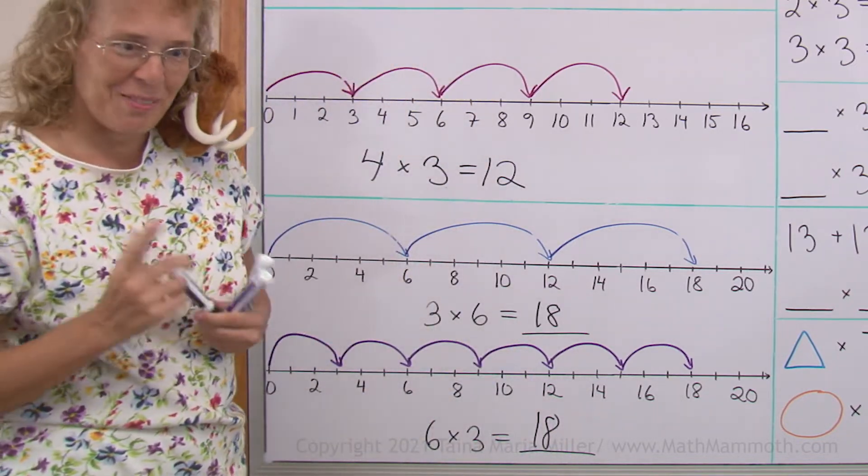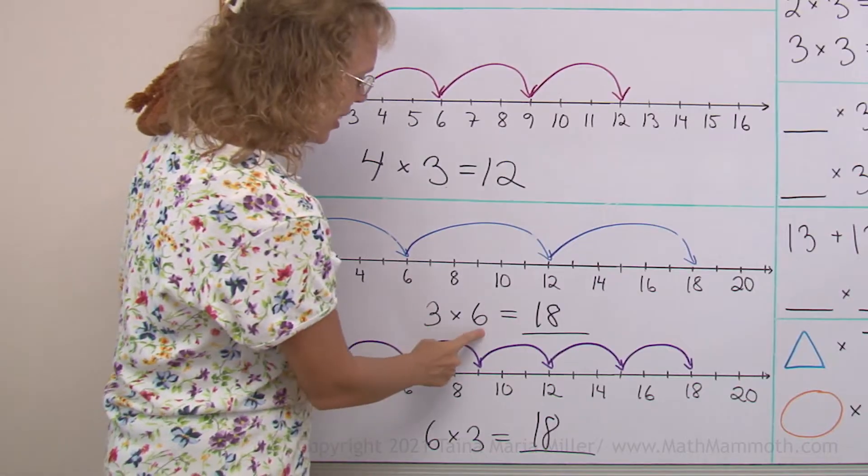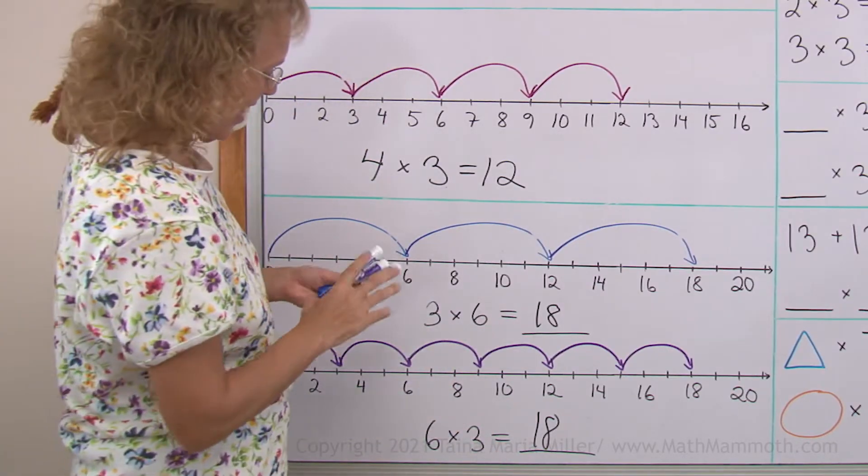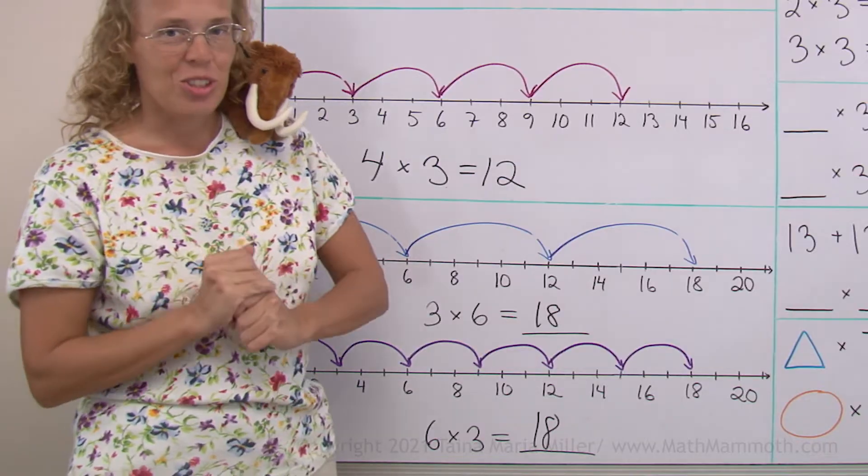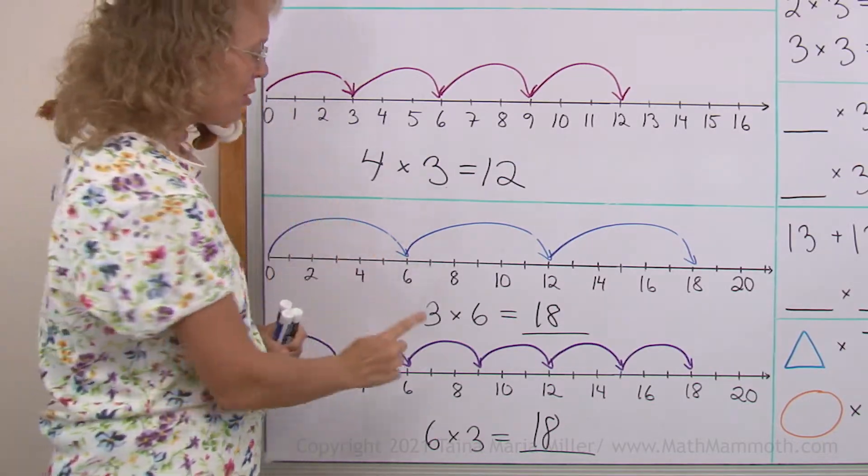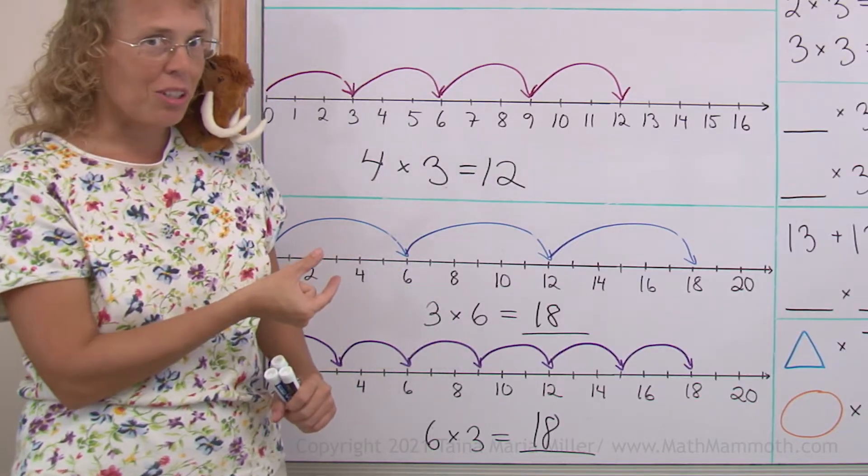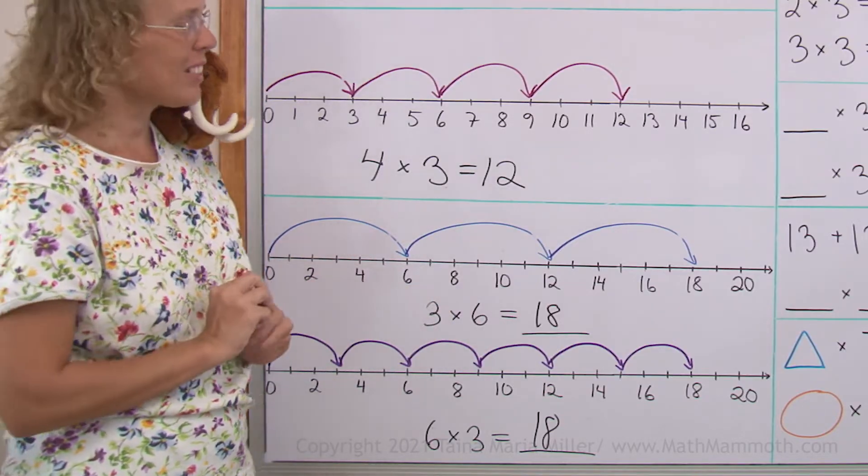Notice something here. Three times six, six times three have the same answer. And that is actually true for any multiplication. If you have four times five here, you can switch it to five times four and still have the same answer. So that's pretty neat.